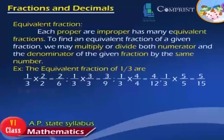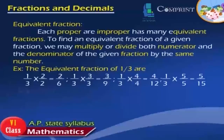Equivalent Fractions. Each proper or improper fraction has many equivalent fractions. To find an equivalent fraction of a given fraction, we may multiply or divide both the numerator and the denominator by the same number. Example: the equivalent fractions of 1 by 3 are 2 by 6, 3 by 9, and 4 by 12.